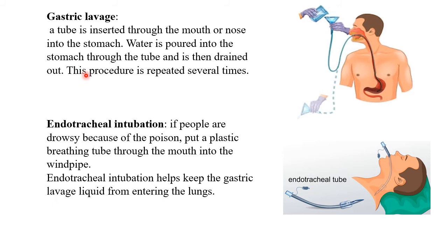Endotracheal intubation: if a person is drowsy because of poisoning, a plastic breathing tube is placed through the mouth into the windpipe. This helps keep gastric lavage liquid from entering the lungs and is also called ventilation.